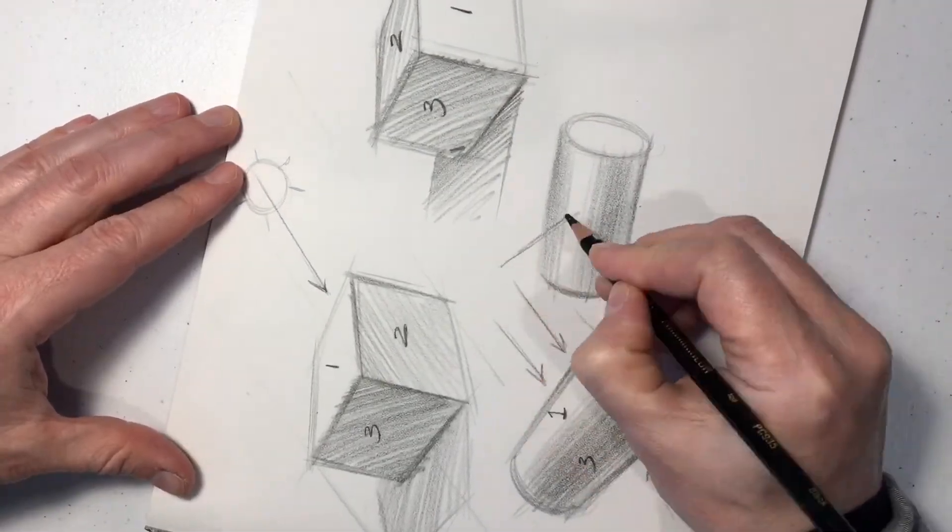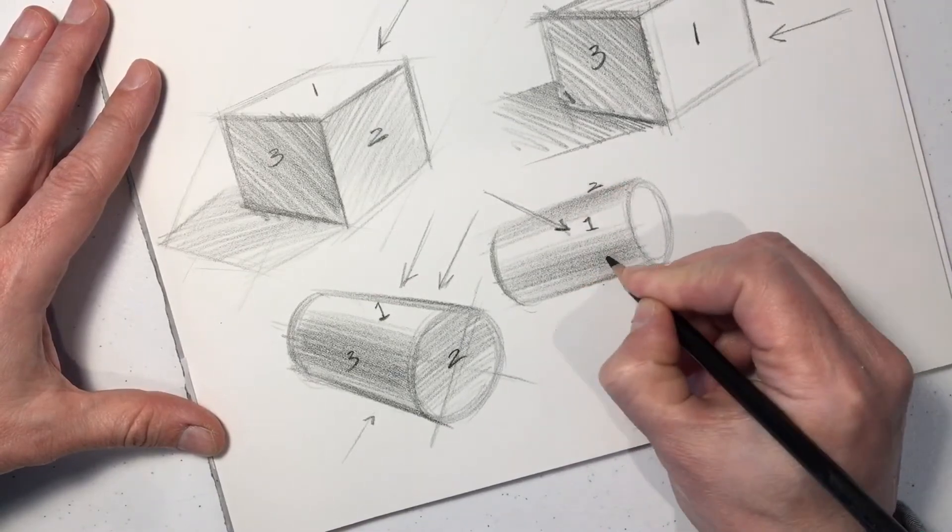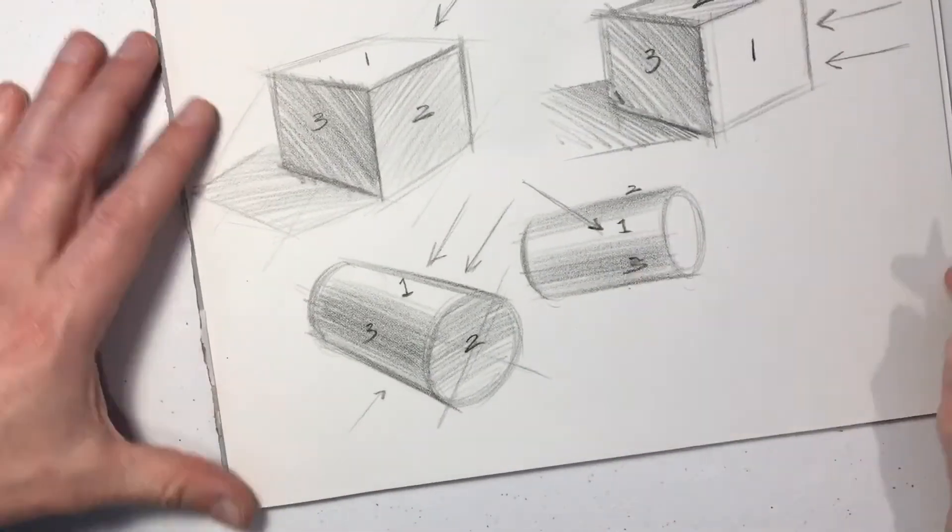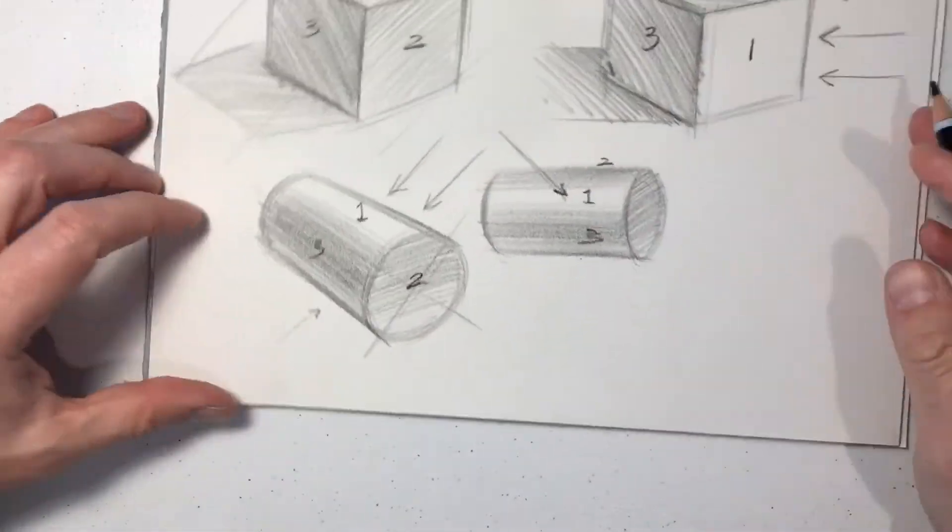And then it might go back into shadow towards the top of the cylinder, reflecting the sky tone. So there's your one, your two, and your three. The end of the cylinder will be facing away, so that would be darker as well.